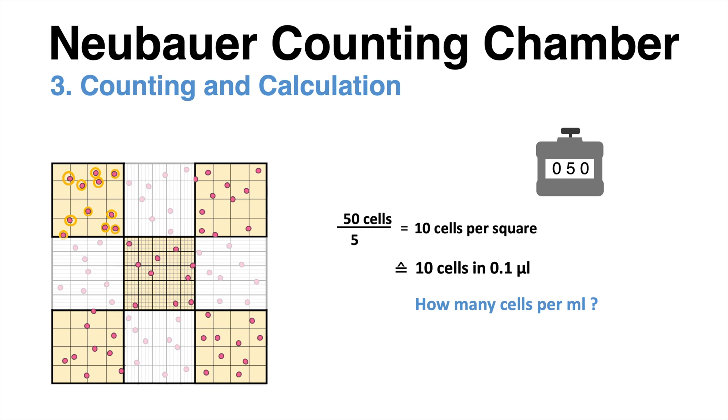But how many cells do we have per milliliter? Since 1 ml is 10,000 times as much as 0.1 µL, we have to take the multiplier of 10 to the power of 4. 10 cells times 10 to the power of 4 times the dilution factor, which was 10 in our case, makes a total number of 1 million cells per milliliter.